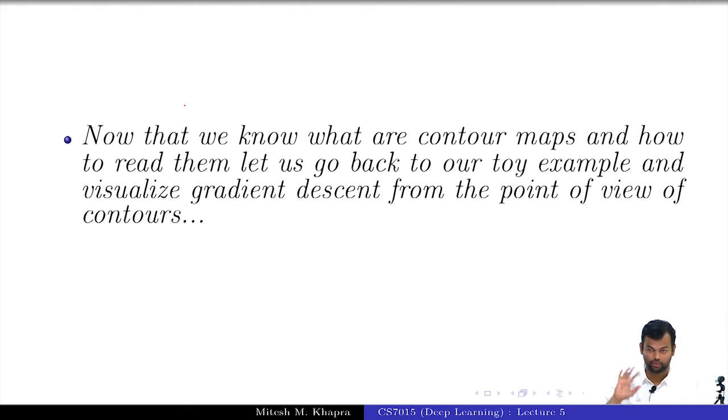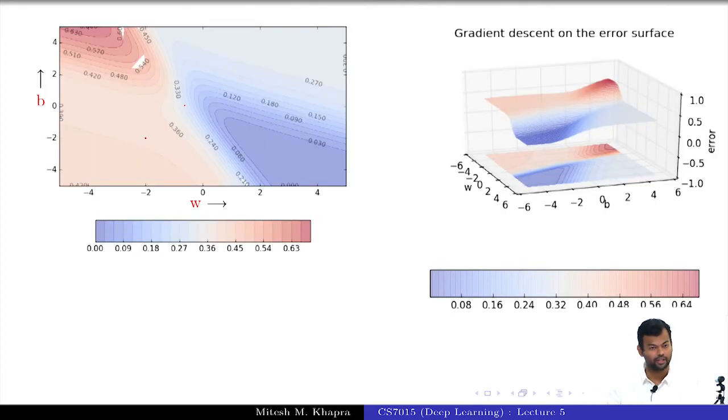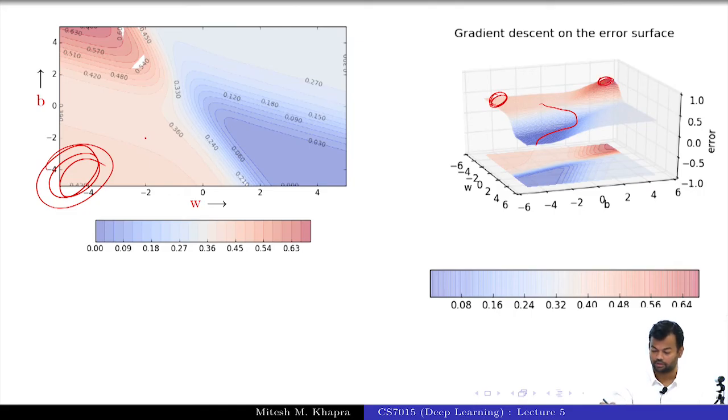So now we know what contour maps are and how to visualize them and so on. So now we will try to see the gradient descent algorithm. Instead of running it on the 3D error surface, we will try to run on this 2D contour map. So this is what I already showed you. I started from here and I showed you how it comes here or something like this. That was the gradient descent. That is something like what the gradient descent algorithm does. Now, again, you just need to reorient yourself. So let us see: this corner is this corner, this corner is this corner, and so on. So you get the reorientation? It just shifted.